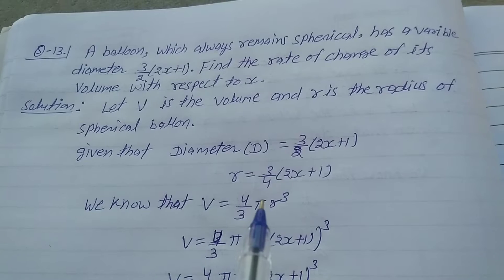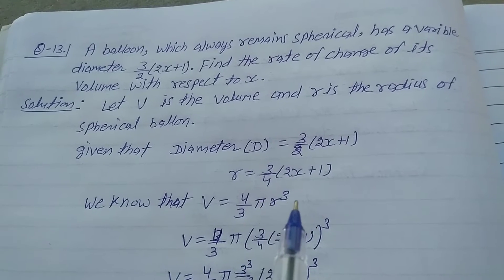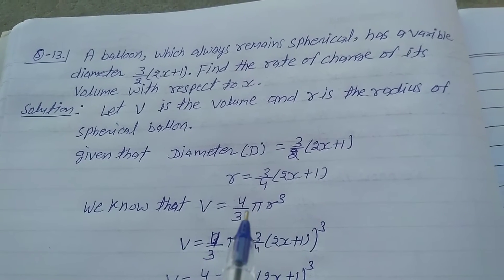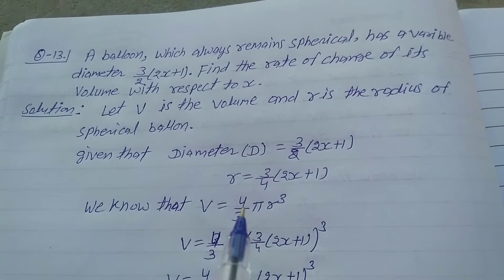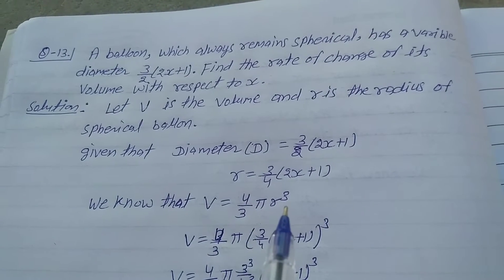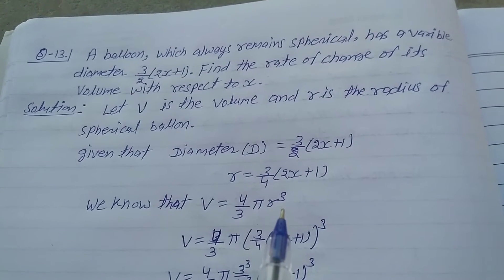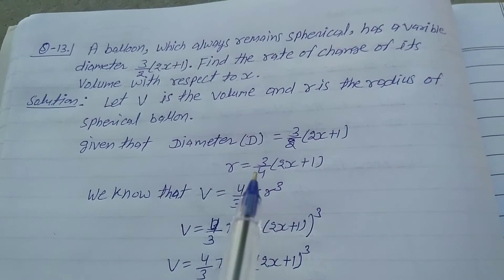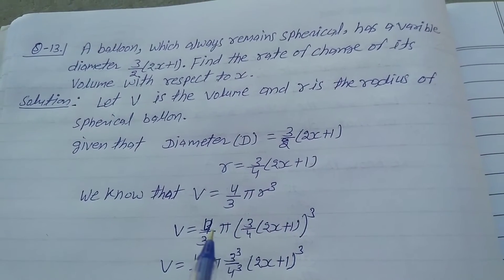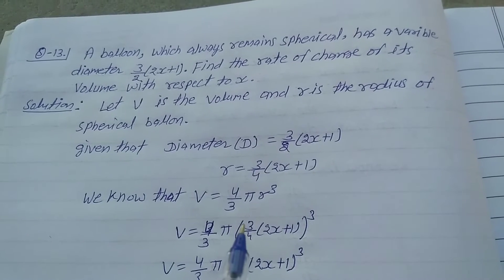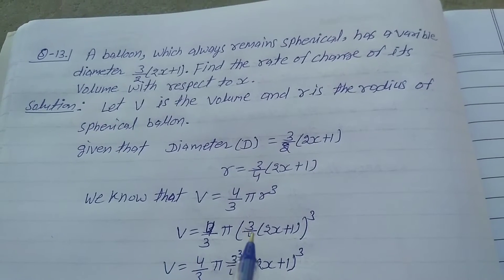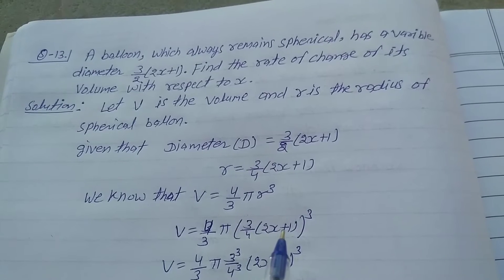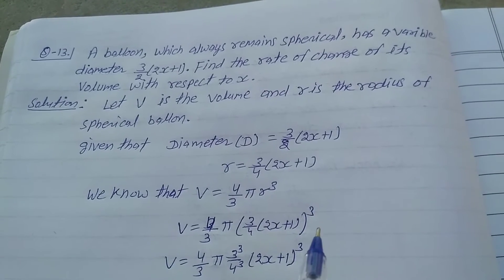We know that the spherical volume formula is V = 4/3 × π × r³. Since the volume is spherical, substitute the value of r: V = 4/3 × π × [3/4 × (2x + 1)]³.